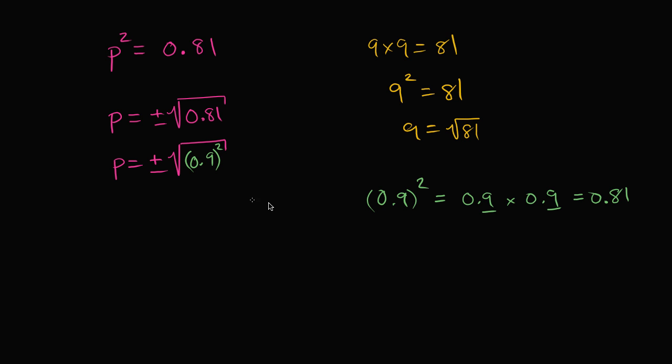In fact, I could also write that as negative 0.9 squared. Because if you put a negative here and a negative here, it's still not going to change the value. Negative times a negative is going to be a positive.